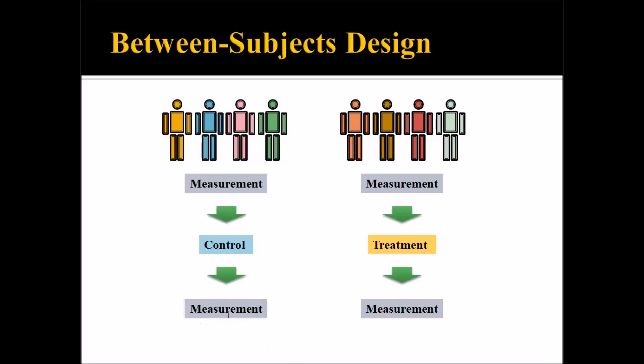Then we have the same measurement at the end. The first measurement we call a pre-test and the second we call a post-test. Pre-test and post-test distinguish when the measurements occur in relation to being in the control group or a treatment group, but the measurement instrument is identical. The second group on the right also has a pre-test, then receives the special teaching method the researcher believes is more effective, and then the post-test — again, the same measurement.